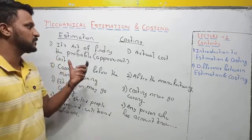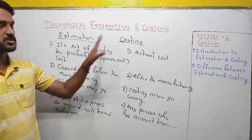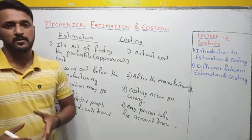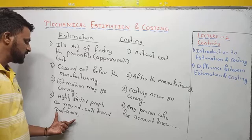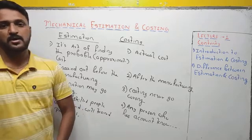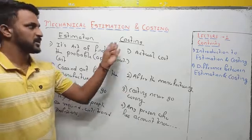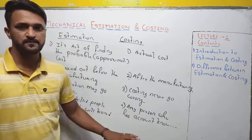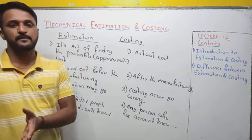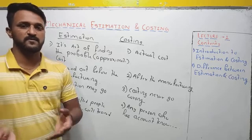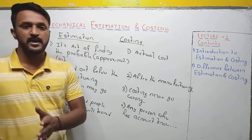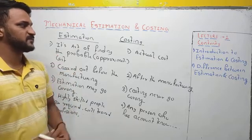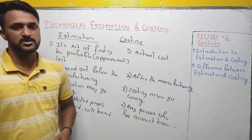Both are very important to determine profit. Profit can be determined through estimation before the actual production of the component. In costing, once you get the total cost, a profit margin of maybe 10%, 25%, or 30% is added to get the selling price of the component. So these are the major differences between estimation and costing.